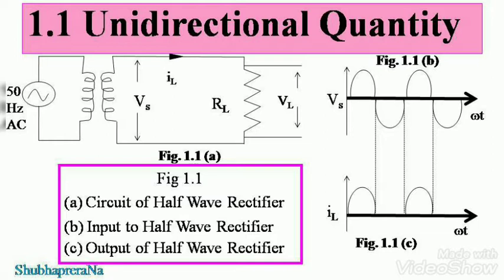There is a source of 50 Hz AC voltage source and a coil across which the voltage is VS. Current flowing through the resistance is IL and the resistance is RL. The voltage across the resistance is VL. So VS is the input, as you see in the waveform, and IL is the output, plotted against time, represented by omega-t.